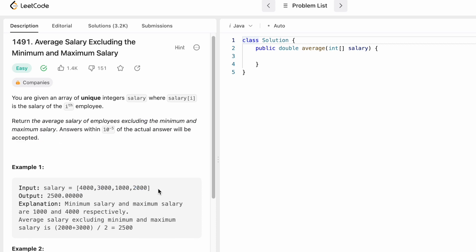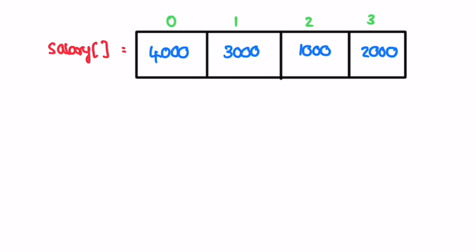Let's take a look at the example to see how we get the output. We have the salary array. To find the minimum and maximum salary, we declare two variables: minimum is initially assigned the maximum possible value (2^31 - 1) and maximum is initially assigned the least possible value (-2^31 - 1). These can be found using Integer.MAX_VALUE and Integer.MIN_VALUE respectively.